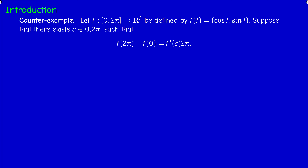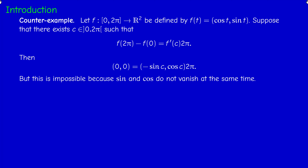Suppose there exists c between 0 and 2π such that f(2π) − f(0) = f′(c) · 2π. By periodicity, the left-hand side is (0, 0). The derivative of f is (−sin t, cos t), so we would get (0, 0) = (−sin c, cos c) · 2π. This implies both cos c and sin c are zero, which is impossible since cos²c + sin²c = 1. This proves that the classical version of the Mean Value Theorem does not hold in this setting.